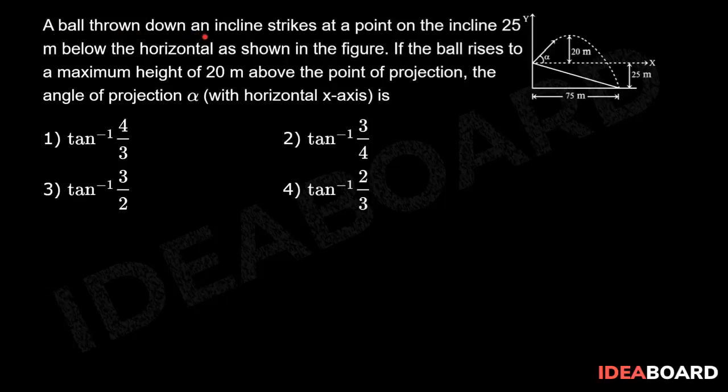A ball thrown down an incline strikes at a point on the incline 25 meters below the horizontal as shown in the figure. If the ball rises to a maximum height of 20 meters above the point of projection, the angle of projection α with horizontal x-axis is: